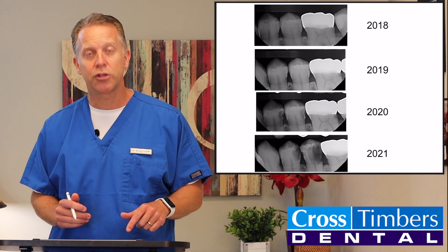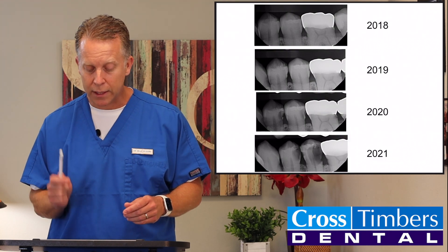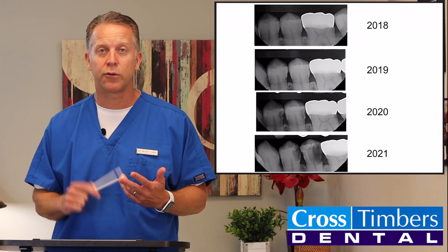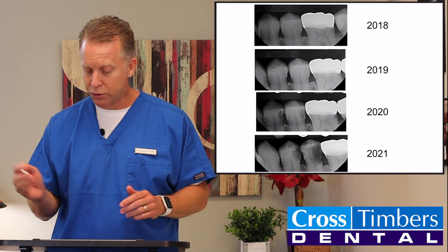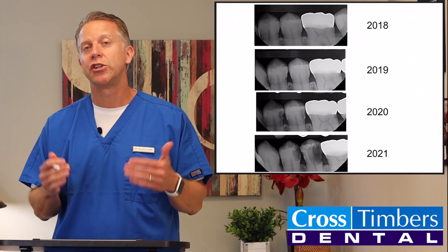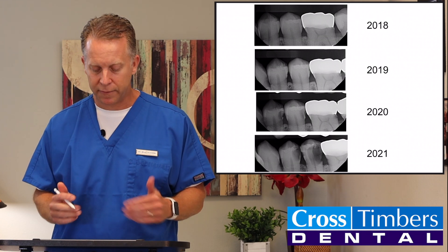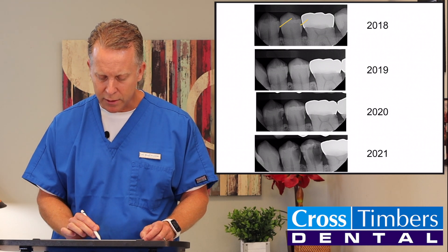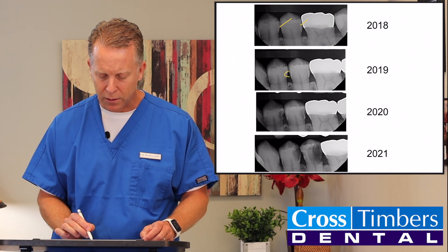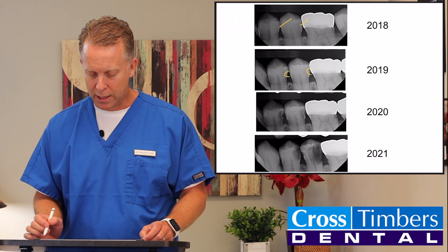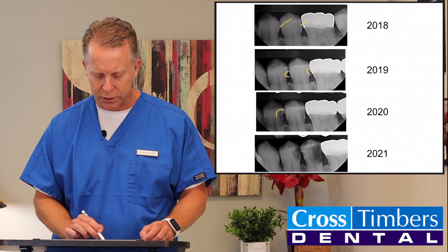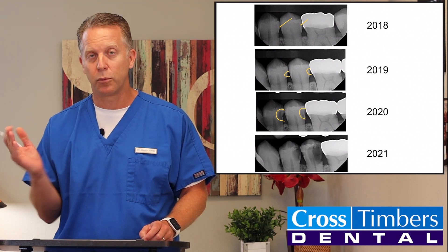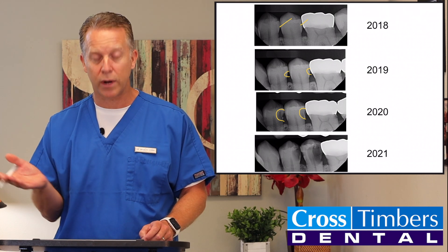On this last case, this individual was just in the other day. In 2018, we took this set of x-rays, then again in 2019, 2020, and 2021. Maybe due to COVID or scheduling problems, she wasn't able to come in and get these teeth fixed. Back in 2018, these teeth were perfectly fine — no problems. In 2019, we started to see a small cavity here and just a hint of one there. By 2020, those small areas had gotten much bigger. At that point, they still could have been filled quite easily.